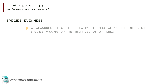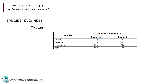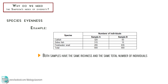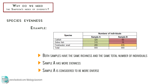Evenness, on the other hand, is a measurement of the relative abundance of the different species making up the richness of an area. For example, we sampled two different lakes for aquatic animals. Both samples have the same richness and the same total number of individuals. However, the first sample has more evenness than the second, because the total number of individuals is quite evenly distributed between the three species. In the second sample, most of the individuals are freshwater snails, with only a few catfish and zebrafish present.